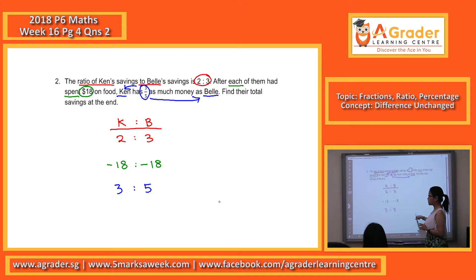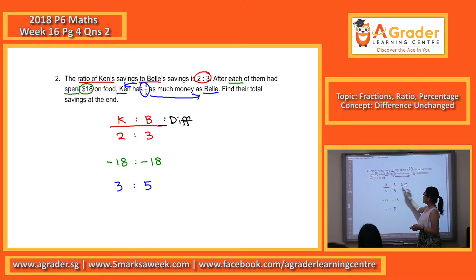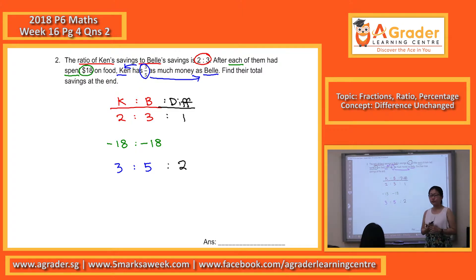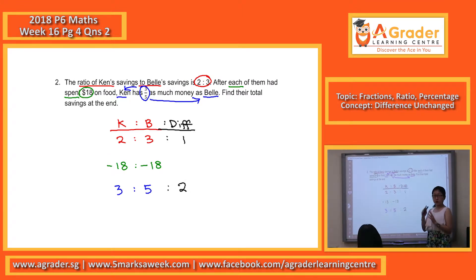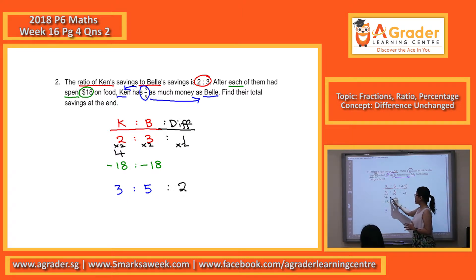We'll be looking at the difference. The difference for the first ratio: 3 minus 2 gives us 1. The difference for the after ratio: 5 minus 3 gives us 2. Since 1 and 2 are different, we need to make them the same. To make the difference equal to 2, we multiply the first ratio by 2. So the entire first ratio — 2 to 3 — multiplied by 2 gives us 4 to 6, with a difference of 2.